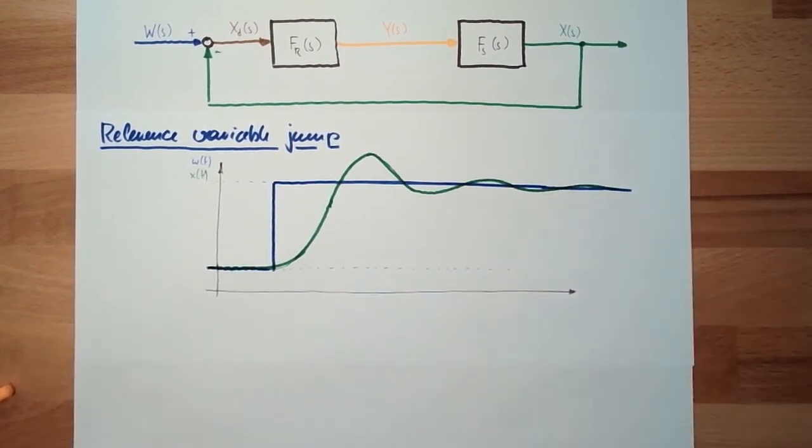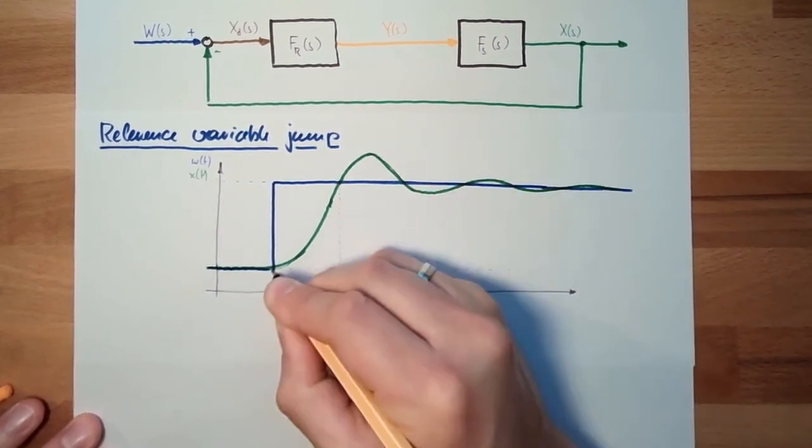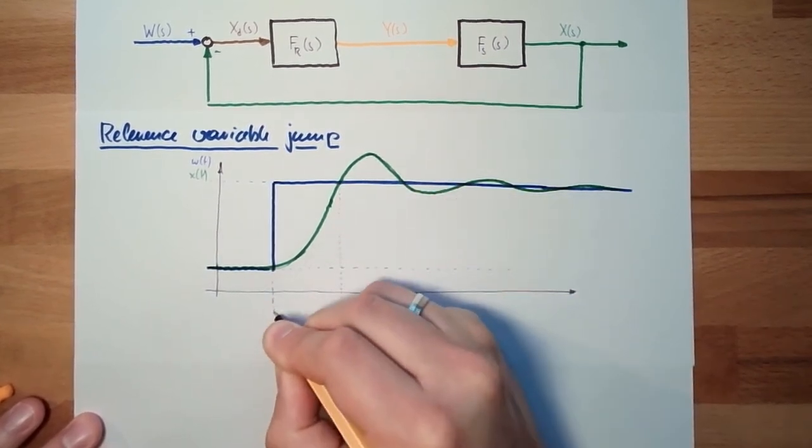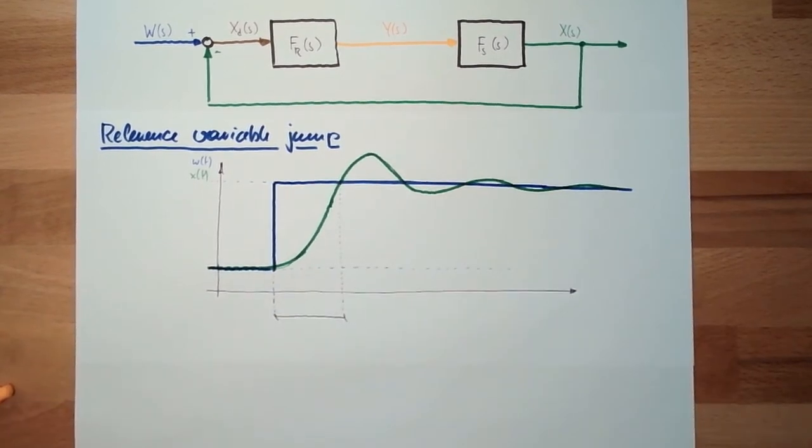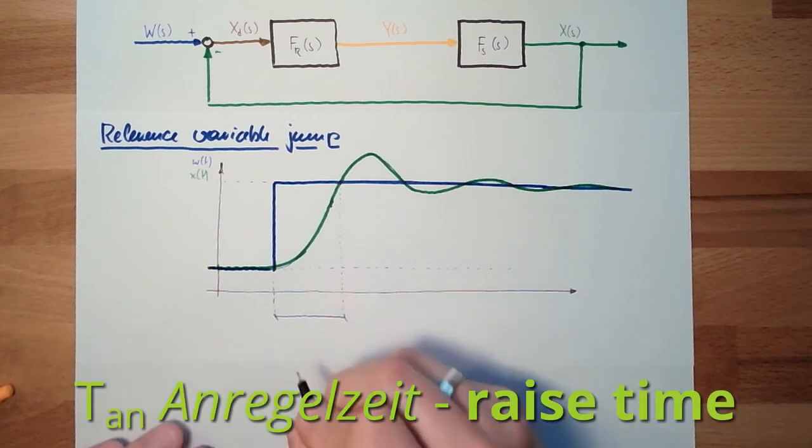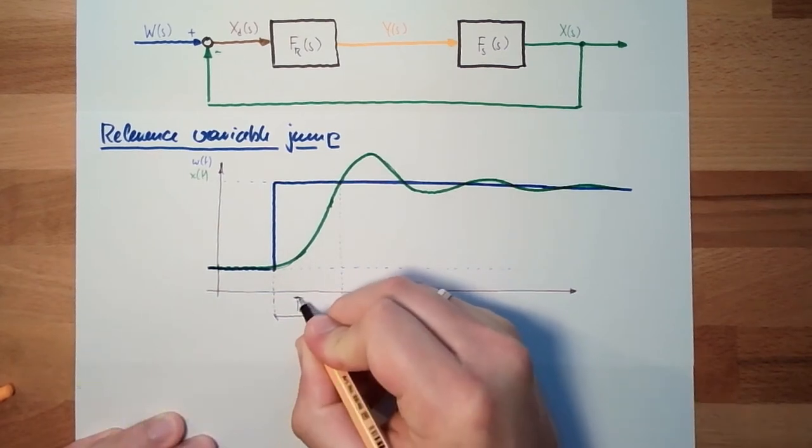There are several characteristic variables. This time here until we reach the first time the desired value, this is called the rise time or in German Anregelzeit. Rise time or Anregelzeit.